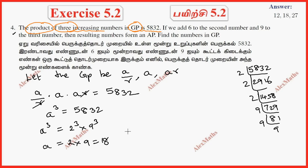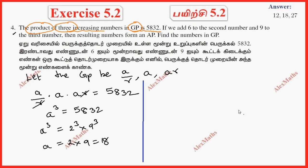If we add 6 to the second number and 9 to the third number, the resulting numbers form an AP. So the first term is A/R, the second becomes A + 6, and the third becomes AR + 9.